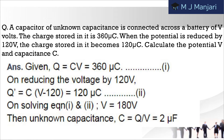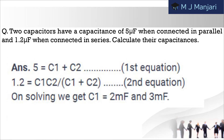Next: a capacitor of unknown capacitance is connected across a battery of V volts. The charge stored in it is 360 microcoulombs. When the potential is reduced by 120 V, the charge stored in it becomes 120 microcoulombs. Calculate the potential V and capacitance C. Next: two capacitors have capacitance of 5 microfarad when connected in parallel and 1.2 microfarad when connected in series. Calculate their capacitance.